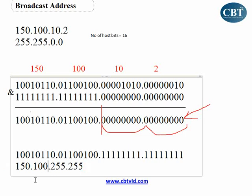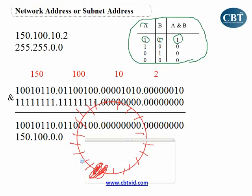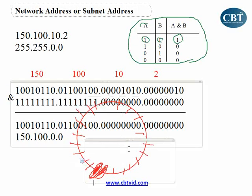This address is the address that if someone sends a packet to it, everyone in that network will receive it. If you look at this circle, the first address is the network address — I cannot use it. The last address is the broadcast address — I cannot use it. Because if you assign this address to a computer, then if someone sends a packet to that address, everyone in the network will receive it, so you cannot send a private packet to that computer.